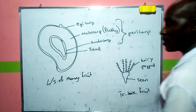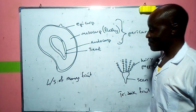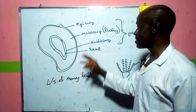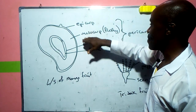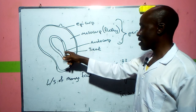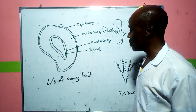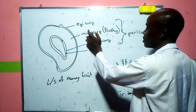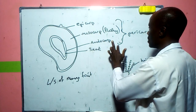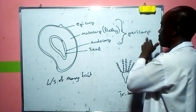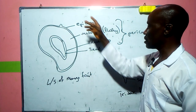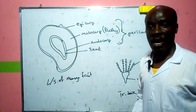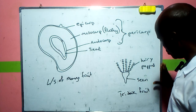Here are the fine drawings. This is the mango. Pay attention — you have the epicarp, mesocarp, endocarp, and then the seed inside the endocarp. These three layers together are called the pericarp.